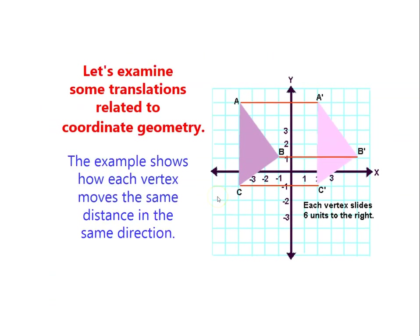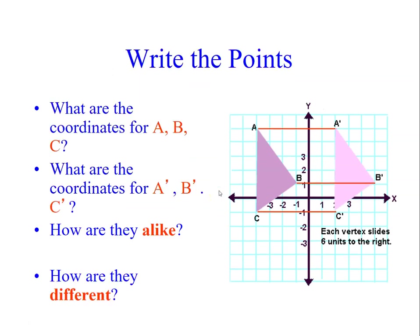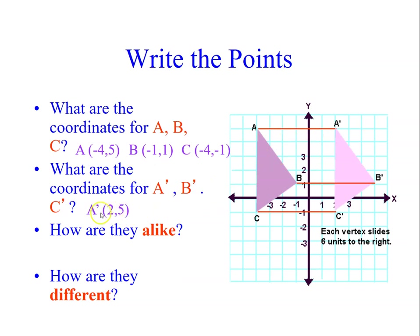So if you're going to write that in geometric coordinate or graphing form, what are the coordinates for A, B, and C? We have A at negative four and five, B is negative one and one, and C is negative four and negative one. What are the coordinates for A prime, B prime, and C prime? A prime is two and five — the same value of Y. B prime has the same value of Y; the change is only in the value of X because it just slides horizontally. And C prime is two and negative one.